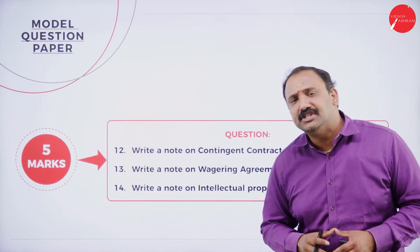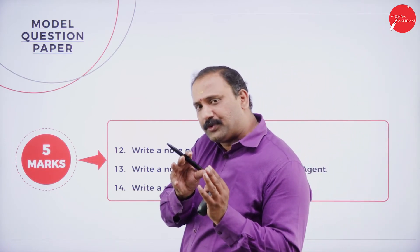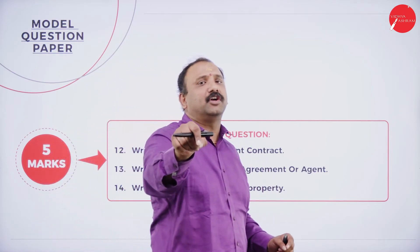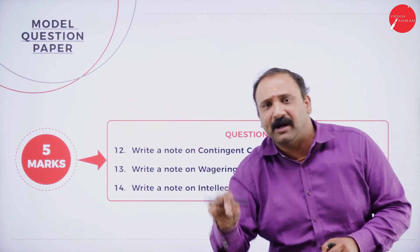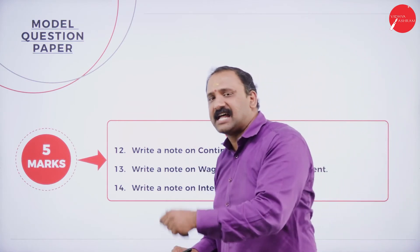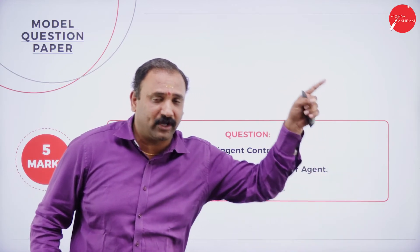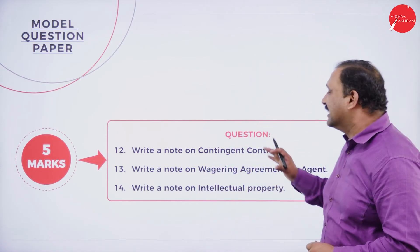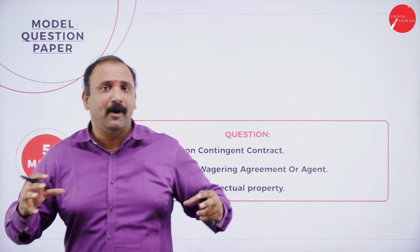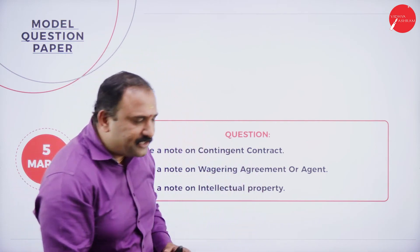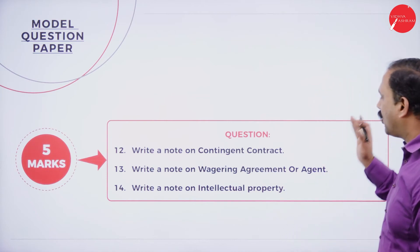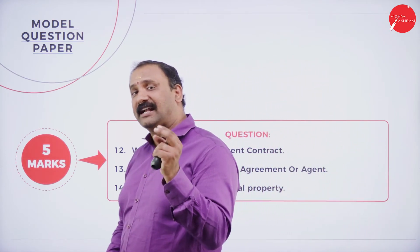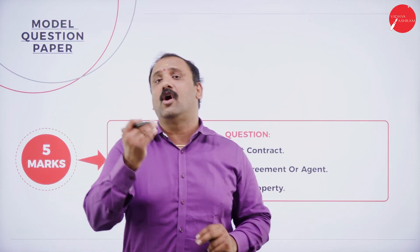In the 5-mark section: a contingent contract is one subjected to certain contingency or conditions. The contract works only based on those conditions — it consists of many ifs and buts. Only if a specific situation occurs is the contract validated; if that situation does not occur, the contingency does not apply. A contingent contract holds itself to certain rules, conditions, and formats, and if those terms are not met, the contract does not become valid.